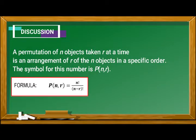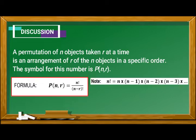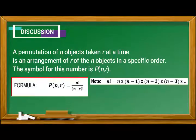The formula of permutation is equal to n factorial over (n minus r) factorial. Note that n factorial is equivalent to all positive integers less than n and n.